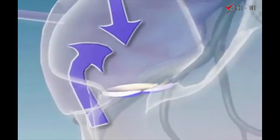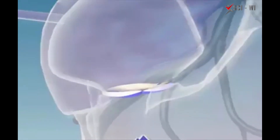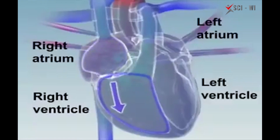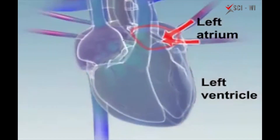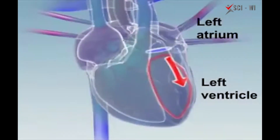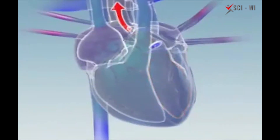When the valves open, they only let the right amount of blood through, and then they close to keep the blood from flowing backward between beats. From the right ventricle, the blood flows to another valve and then to the lungs, where it picks up oxygen. It flows back into the left atrium of the heart and through the mitral valve into the left ventricle. From the left ventricle, blood is pumped through the aortic valve and into the aorta, going out to the rest of the body.